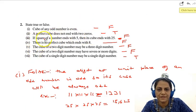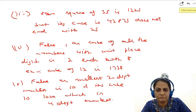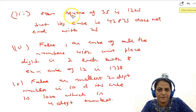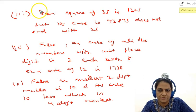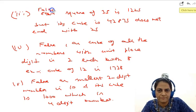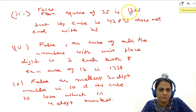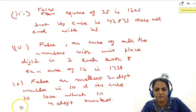Now third part is, if square of a number ends with 5, then its cube ends with 25. So this is also not true, this is also false. For example, square of 35 is 1225 ending with 25, but its cube is 42,875 that does not end with 25. So this is also a false statement.